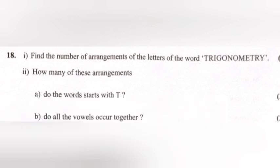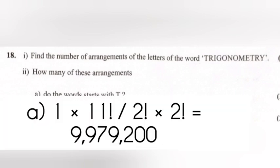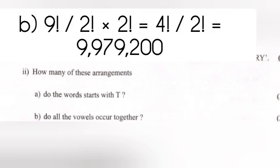Question 2. How many of these arrangements: (a) start with T? (b) have all vowels occurring together? Answer: (a) 1 into 11! divided by (2 into 2) equal 9,979,200. (b) 9! divided by (2 into 2) into 4! divided by 2 equal 9,979,200.